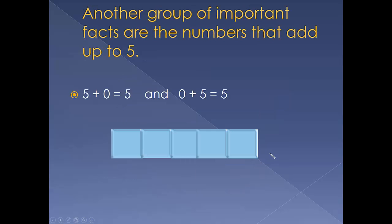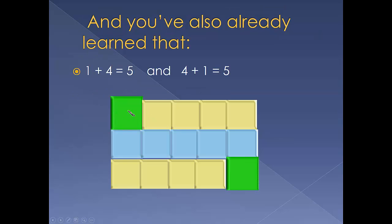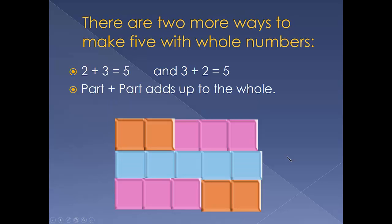Another group of important facts are the numbers that add up to five. So five plus zero is five. The identity number plus five equals five. And we've also learned that one plus four and four plus one add up to the whole five. There are two more ways to make five with whole numbers. Two plus three and three plus two. Order doesn't matter. Part plus part adds up to the whole. They're both there at the same time.